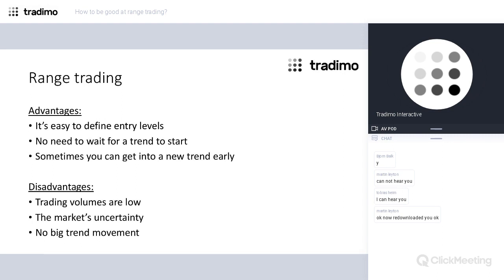We don't see big trend movements. So the profit in terms of pips or points can be limited here. In terms of fundamental analysis, a range reflects the uncertainty of the market and indecisive conditions. So in many cases we can't realize fundamental ideas when we have this kind of range trading — we have to rely on technical analysis primarily.